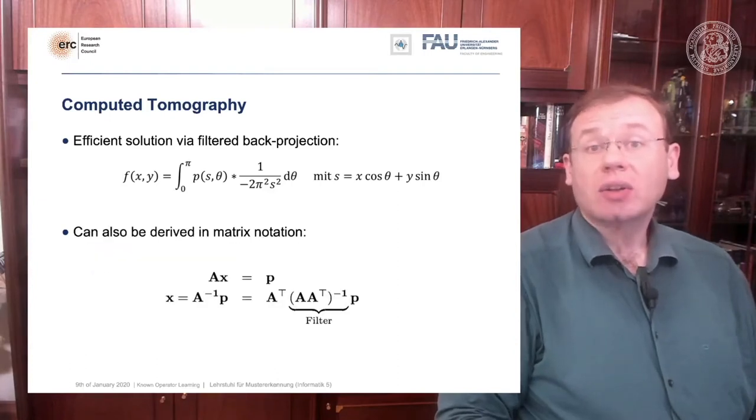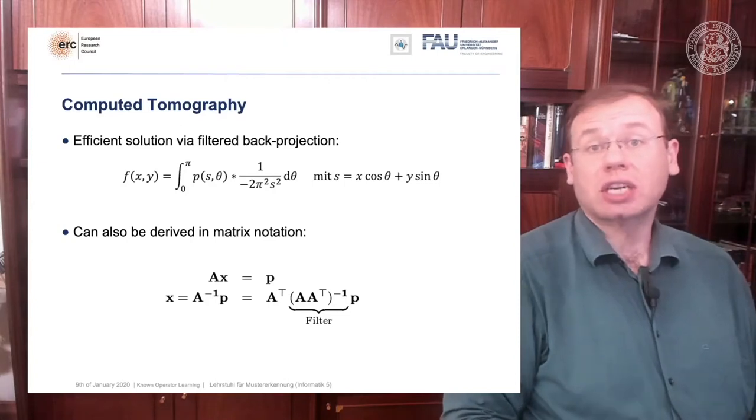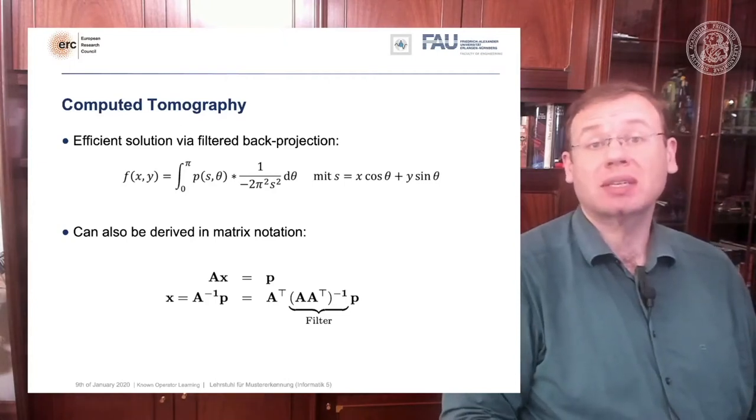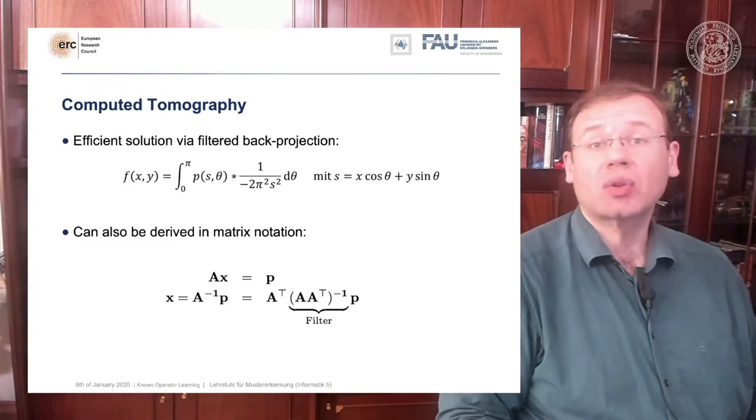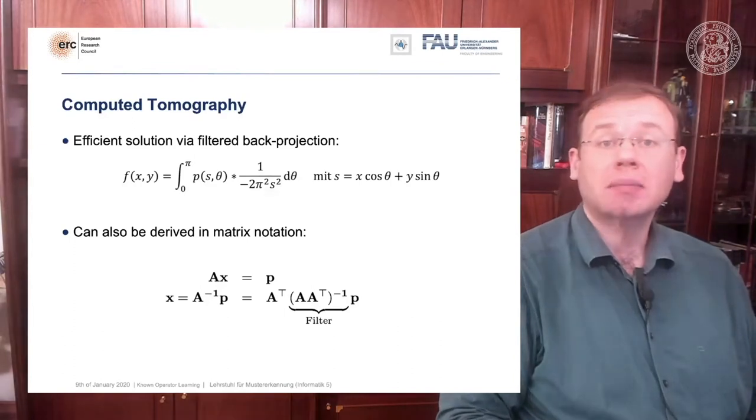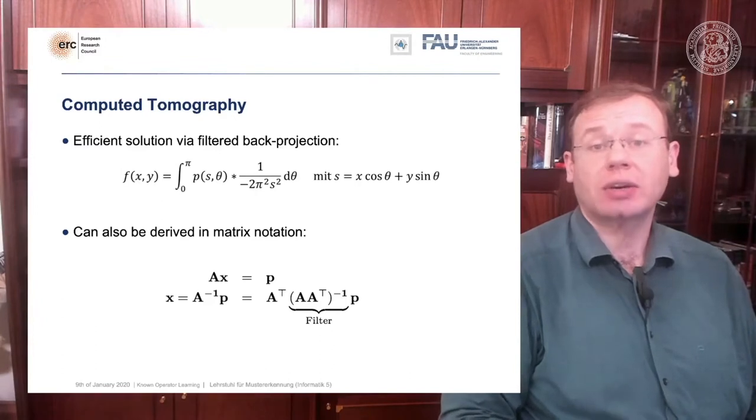This can also be expressed in matrix notation. We know that the projection operations can simply be described as a matrix A that describes how the rays intersect with the volume. With this matrix you can simply take the volume X multiplied with A and this gives you the projections that you observe in the scanner.